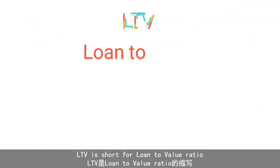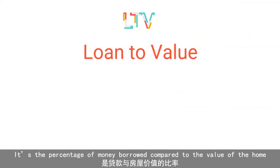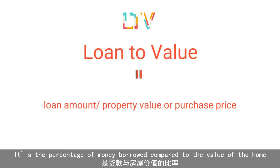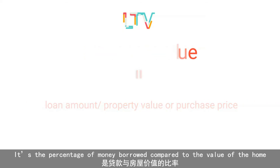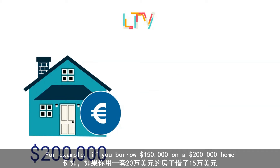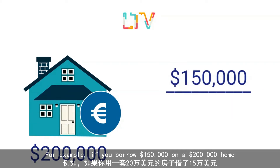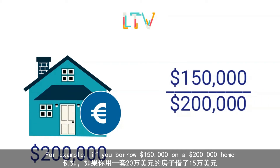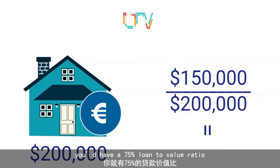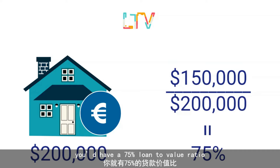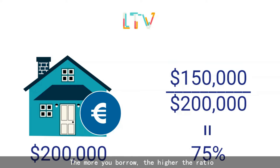LTV is short for loan-to-value ratio. It's a percentage of money borrowed compared to the value of the home. For example, if you borrow $150,000 on a $200,000 home, you'd have a 75% loan-to-value ratio. The more you borrow, the higher the ratio.